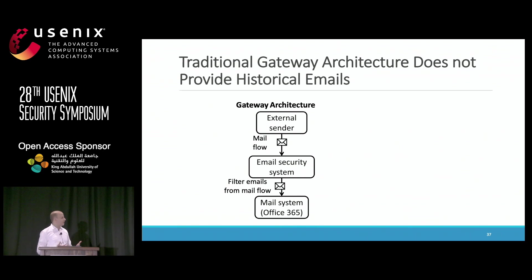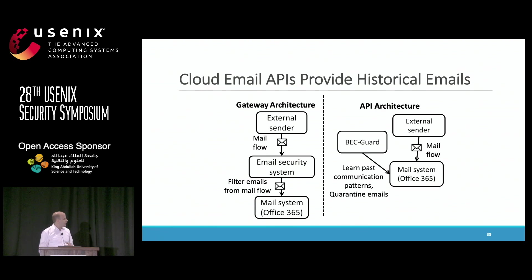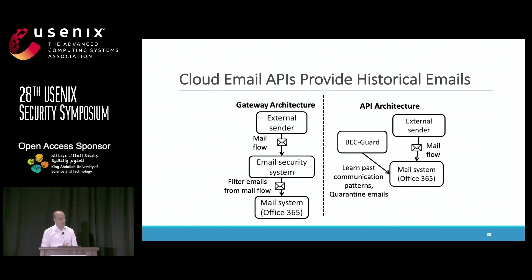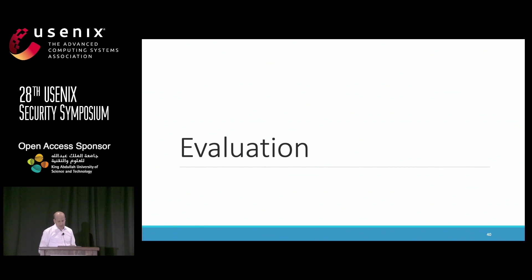One more important design feature: historically, email security systems are designed as filters sitting between the external world and the mail system. But some of our features require access to historical information on how people in the organization typically communicate. So we designed an API-based architecture where instead of sitting in the mail flow, we sit outside it and talk to the APIs of cloud email providers like Office 365, which also provide us with historical email data.